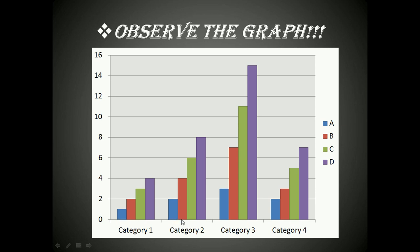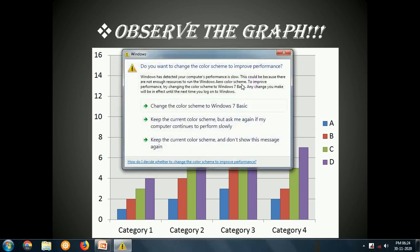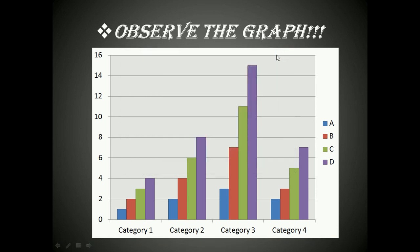Out of category one, two, three, and four, which is the different or odd one out? It is nothing but category four. The things which are increasing in a uniform manner — in our subject, the numbers which are increasing in a uniform manner — are what we are discussing. What are those numbers called, and what is the purpose of learning them? Let us see the introduction.